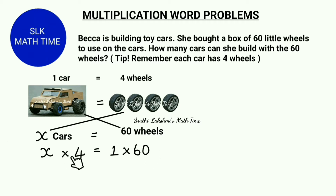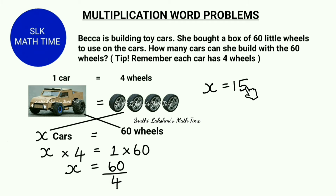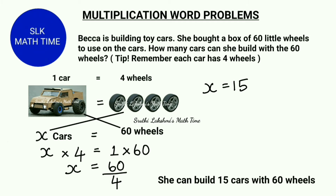This 4 is in multiplication, and when it goes to the other side it becomes division. So it becomes x equal to 60 divided by 4. We do this to find the x value which is unknown to us. 60 divided by 4 is 15, so x equals 15. That means Becca can build 15 cars with 60 wheels.